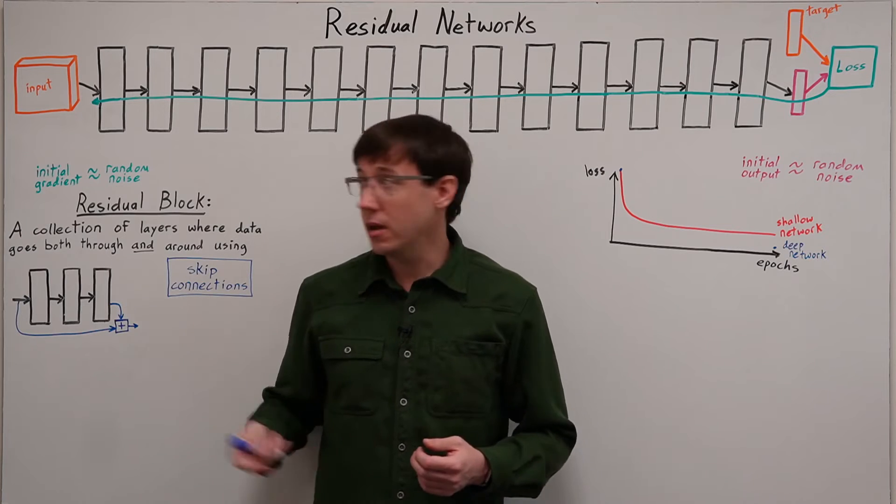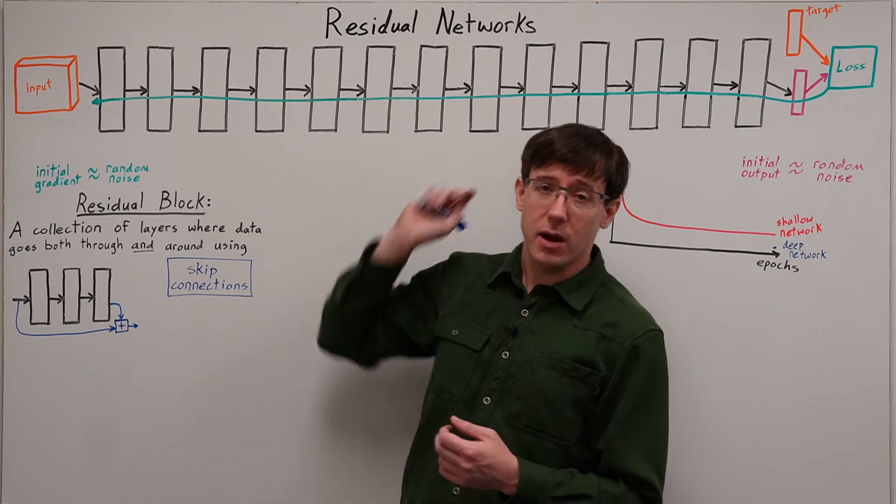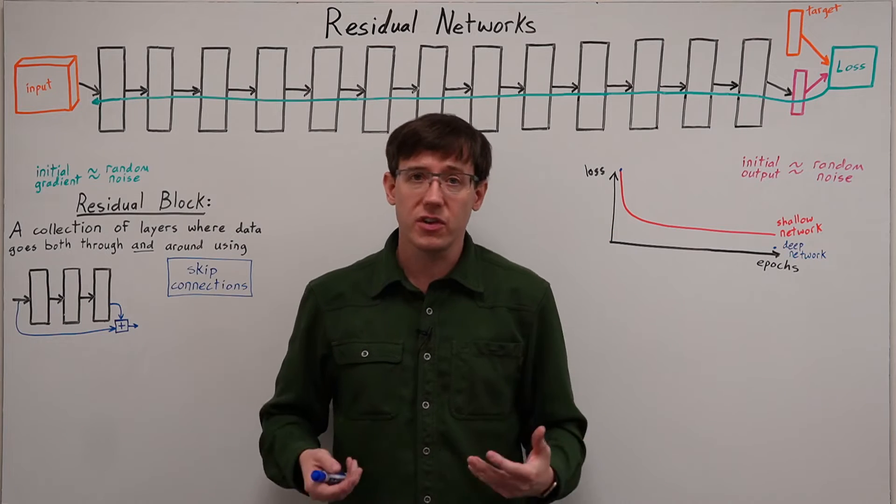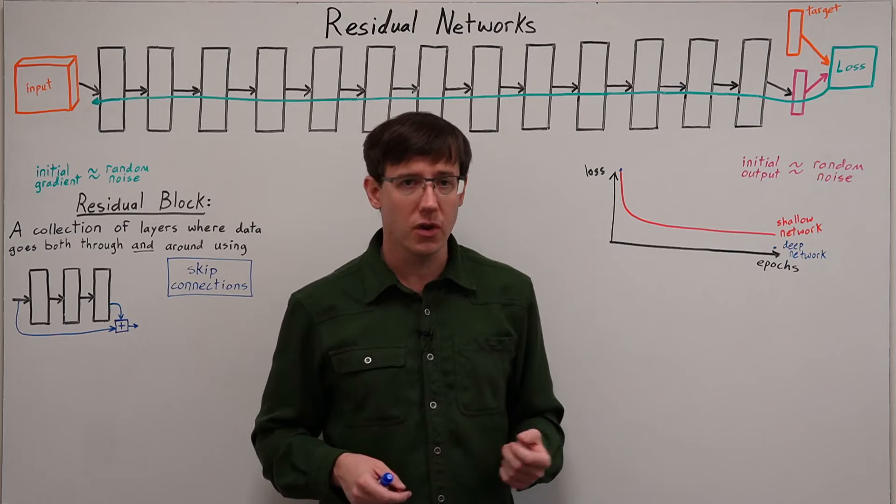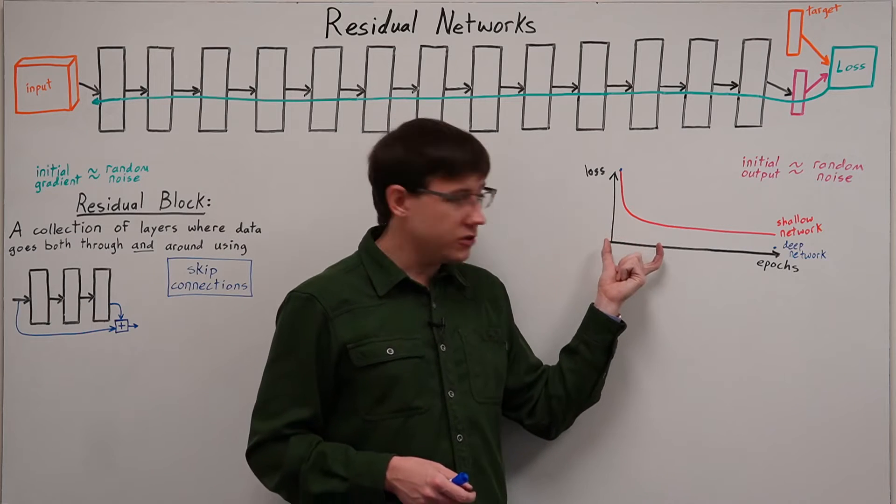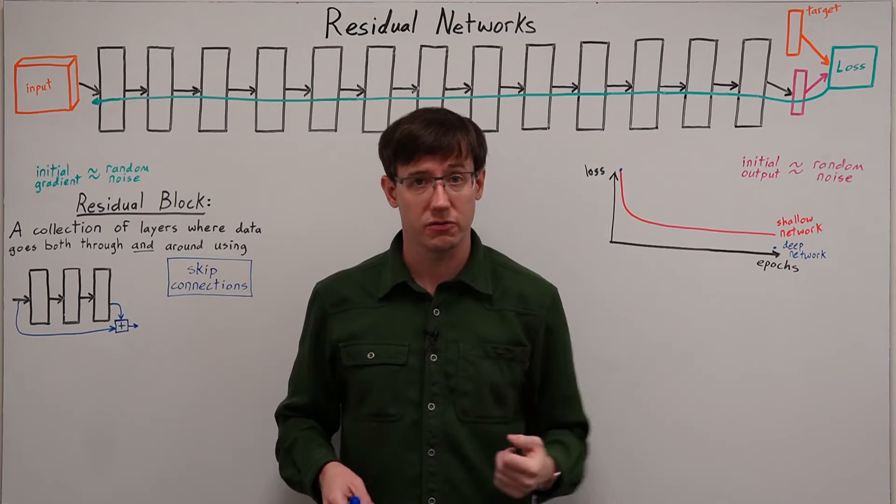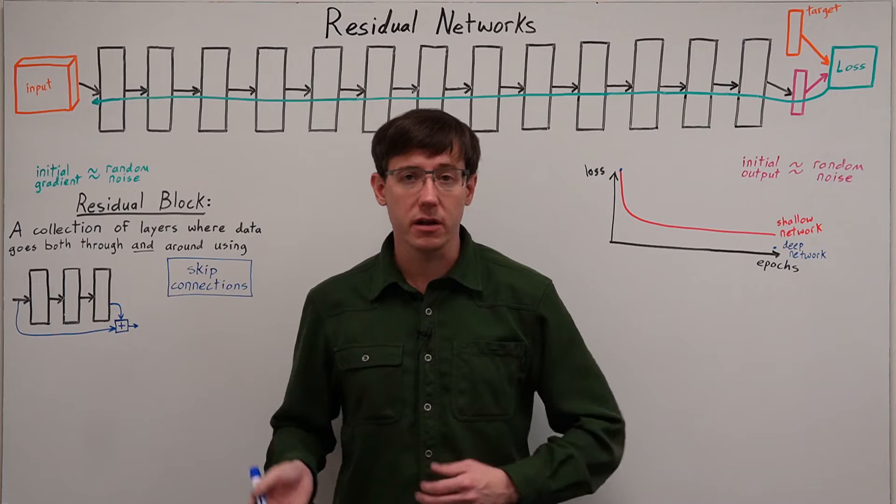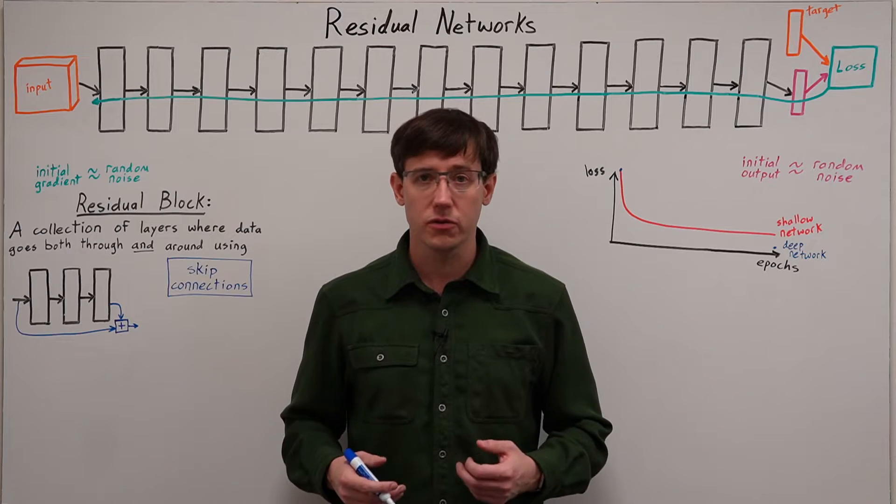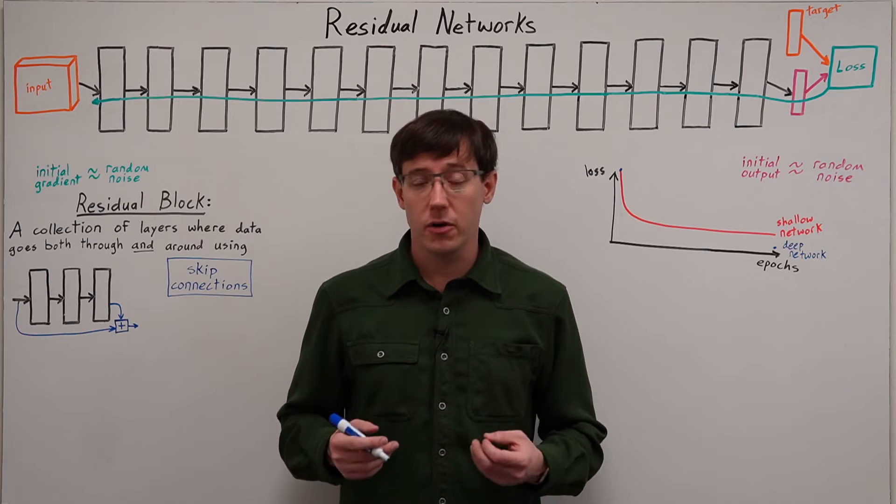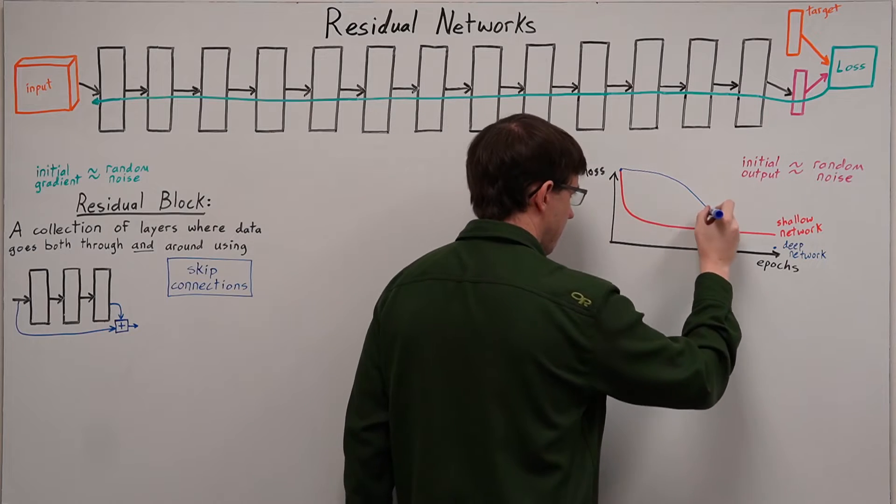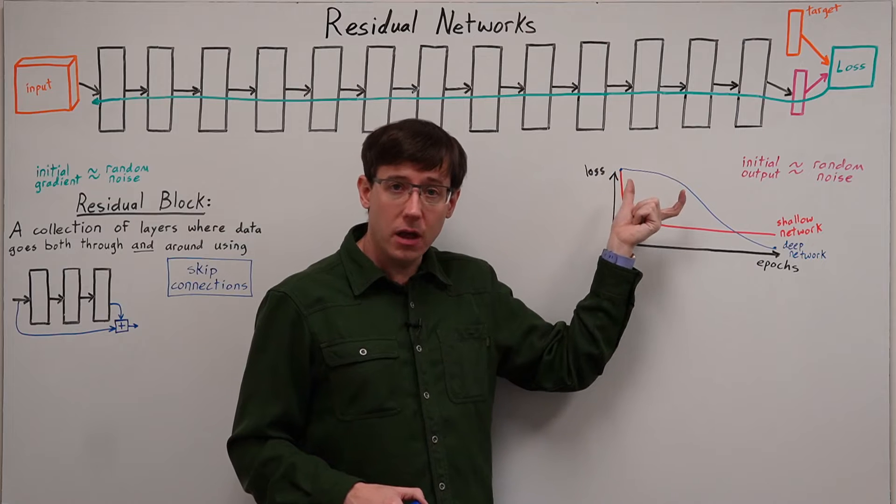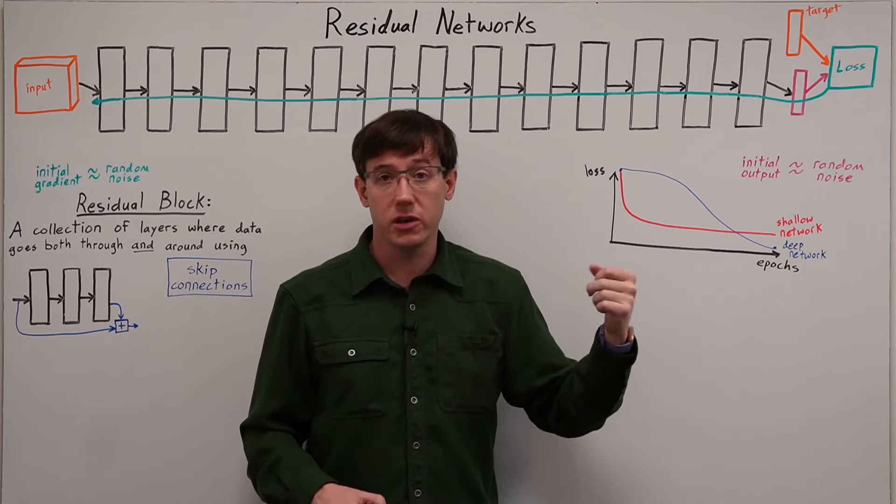But independent of the data set, the depth of the network can be an obstacle to training. When we have success training shallow neural networks, we tend to see a large decrease in the loss in the first few epochs of training. But if we build a deep neural network out of dense or convolutional layers, the loss graph often looks more like this, where we can run an awful lot of training with very little decrease in the loss.